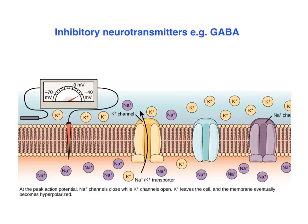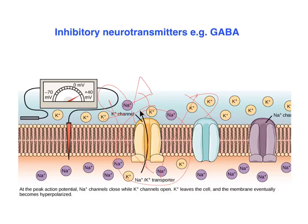Inhibitory neurotransmitters, on the other hand, are going to have an opposite effect. In this case, we've got a bunch of potassium ions — the K+ ions here — located on the inside of the postsynaptic neuron. When an inhibitory neurotransmitter binds with the receptor sites on the postsynaptic neuron, it's going to open up some of these potassium channels right here. Some of this potassium, which is positively charged, is going to leak out of the postsynaptic neuron. Another thing that can happen is we can get some negatively charged chlorine ions that can actually come in to the postsynaptic neuron.